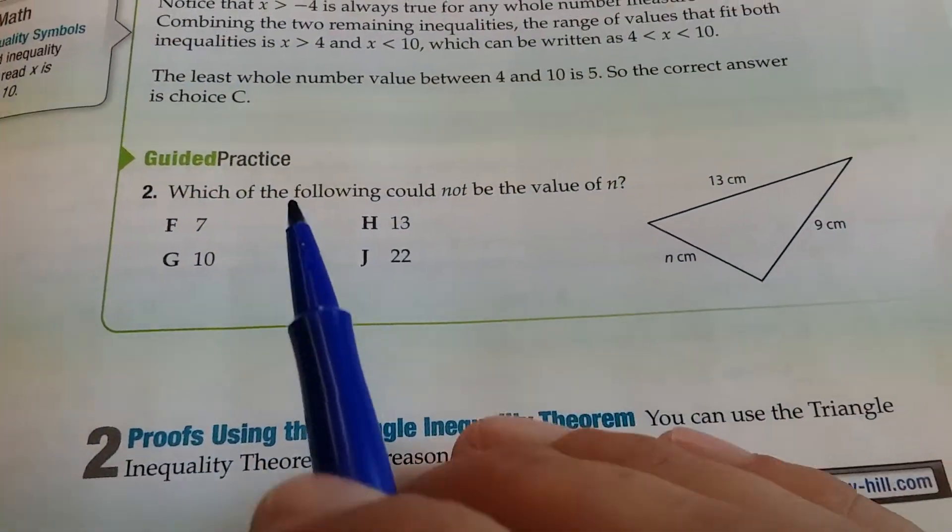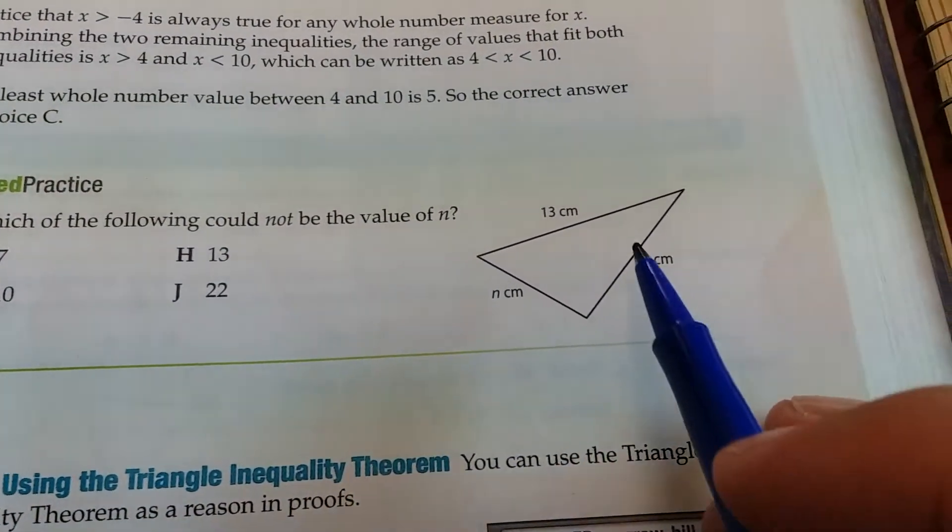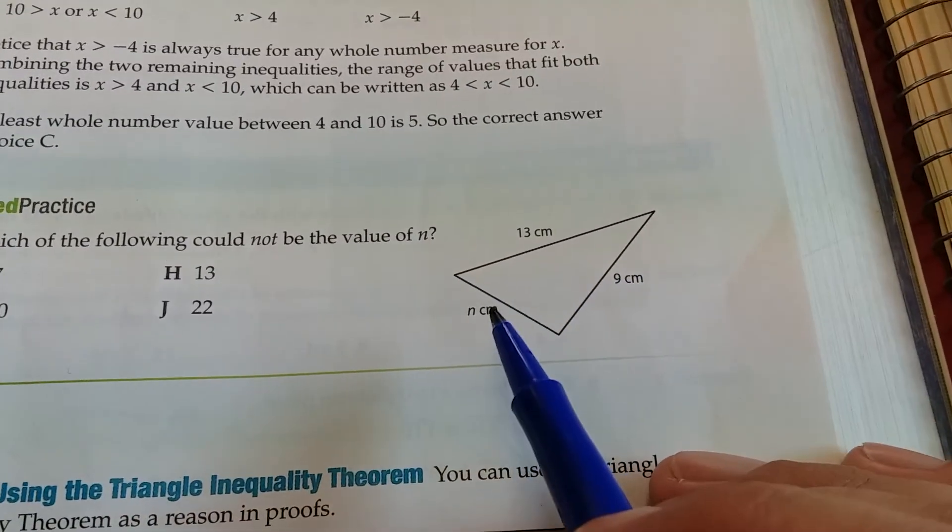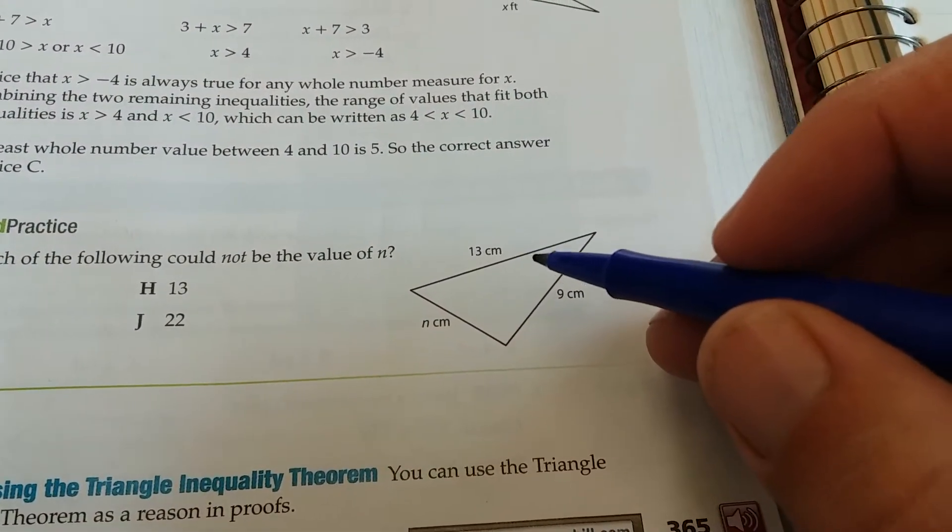Which of the following could not be a value of n? Okay, so we've got to find the range of lengths for this side n. So we're going to find the difference of these two numbers and the sum of these numbers.